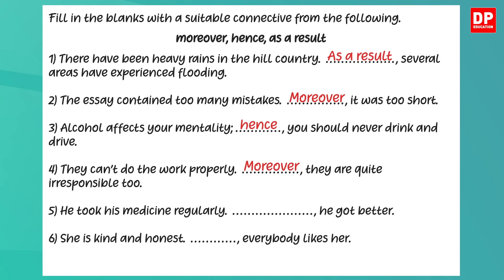This is the fifth one: 'He took his medicine regularly. Blank. He got better.' Here again you have cause and result — the result is him getting better and the cause is taking medicine regularly. So we use 'as a result'. The answer is: 'He took his medicine regularly. As a result, he got better.'